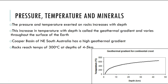This increase in temperature with depth is called the geothermal gradient, and it does vary throughout the surface of the earth. For example, in the Cooper Basin in northeast South Australia, there's a really high geothermal gradient — rocks are reaching temperatures of 300 degrees Celsius at depths of only four or five kilometers, when the expected temperature on our scale should be around 200 degrees.